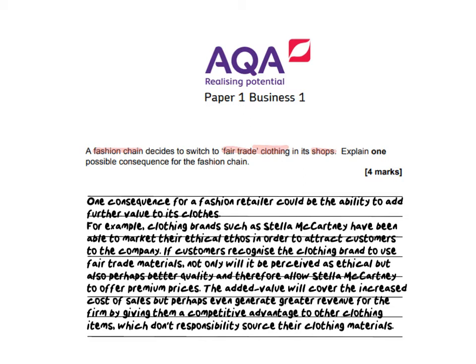One consequence for a fashion retailer could be the ability to add fair value to its clothes. For example, clothing brands such as Stella McCartney have been able to market their ethical ethos to attract customers. If customers recognise the clothing brand uses fair trade materials, it will be perceived as not only ethical but perhaps better quality, allowing Stella McCartney to offer premium prices. The added value will cover the increased cost of sales and perhaps even generate greater revenue by giving them a competitive advantage over other clothing brands which don't responsibly source their clothing material. That would generate you the four marks — there's development, a proper explanation of why it's a valid point, what it leads to, and context throughout from the very first sentence to the end.